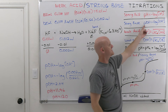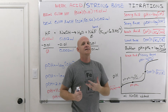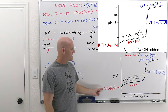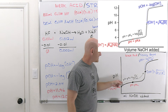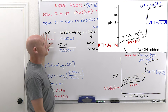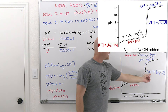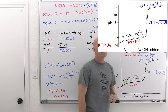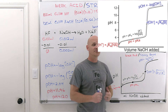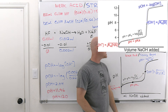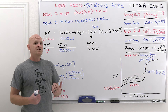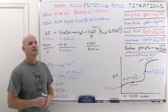Beyond the equivalence point, you ignore the weak base and treat it as a pure strong base solution. Take the negative log of the hydroxide concentration — make sure you convert moles back to molarity by dividing by total volume — to get pOH, then subtract from 14 to get pH. That's weak acid strong base: four different regions, four different methods for calculating pH.